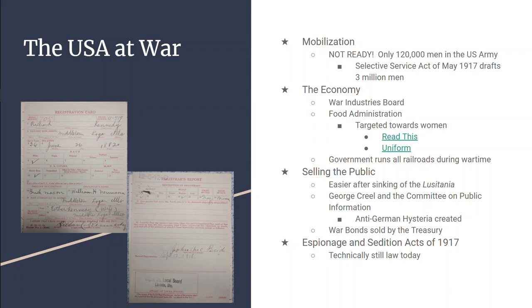Another way for the government to get the public on their side was by selling war bonds. The Secretary of the Treasury, William McAdoo, advertises war bond sales. Basically, people buy savings bonds and the money from those bonds is used to pay for the war. The war bonds are so successful that the United States pays for over two-thirds of the entire cost of World War I with these savings bonds.